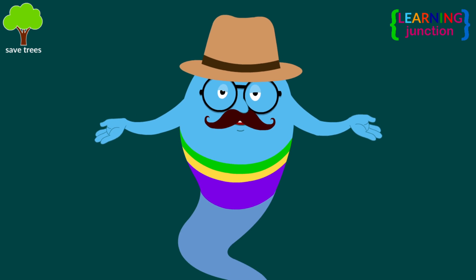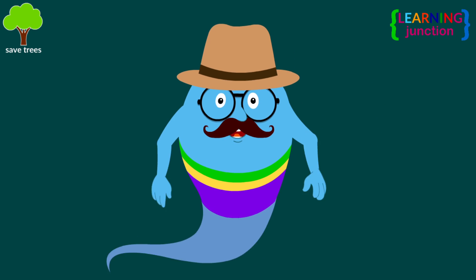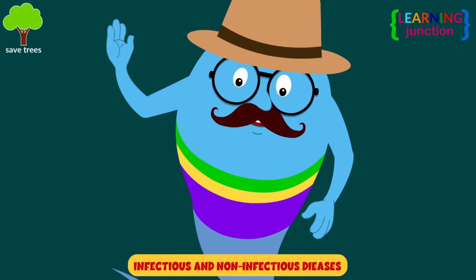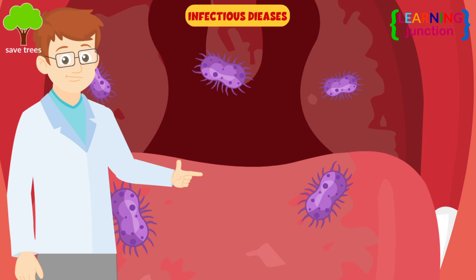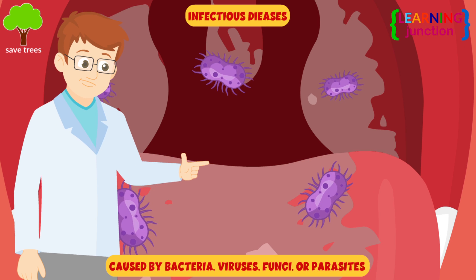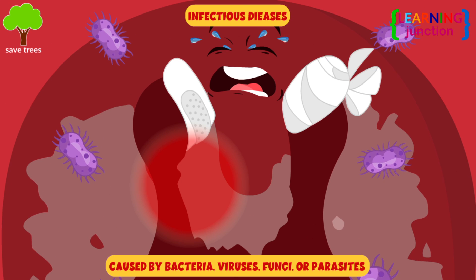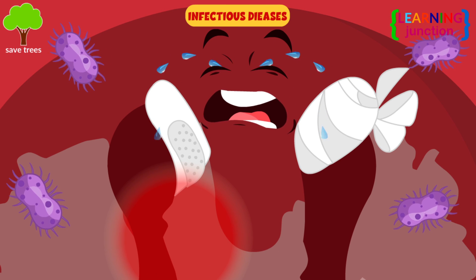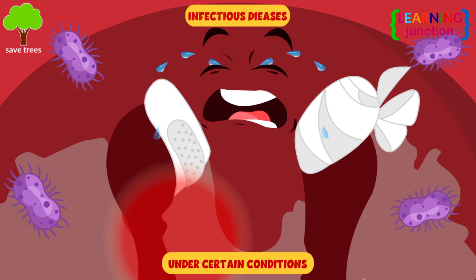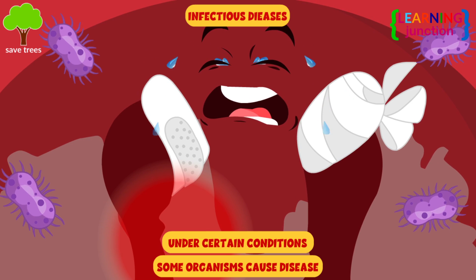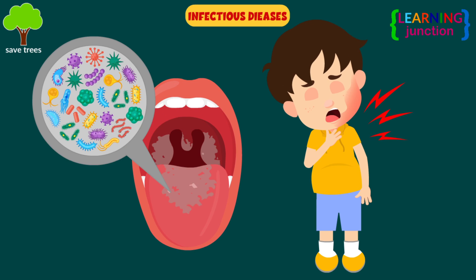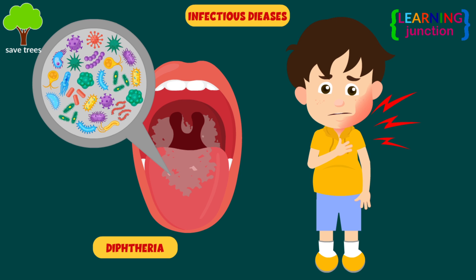There is one more way to categorize diseases: infectious and non-infectious diseases. Infectious diseases are caused by bacteria, viruses, fungi, and parasites. Organisms live in the body and under certain conditions, some organisms can cause disease. For example, diphtheria is a serious infection caused by bacteria.